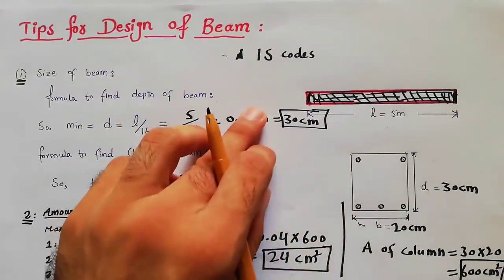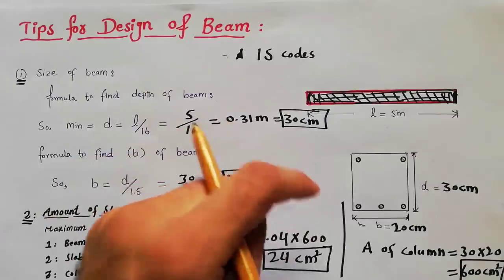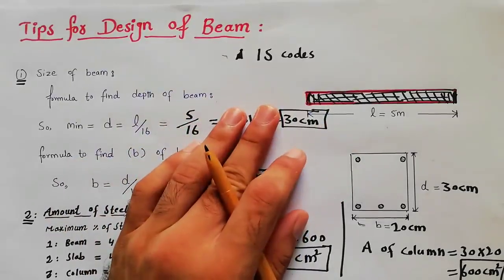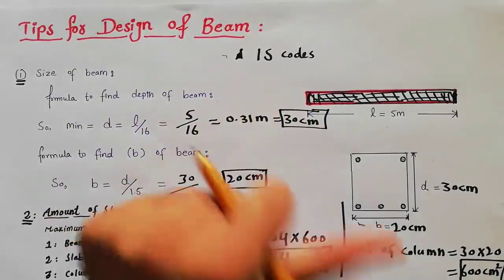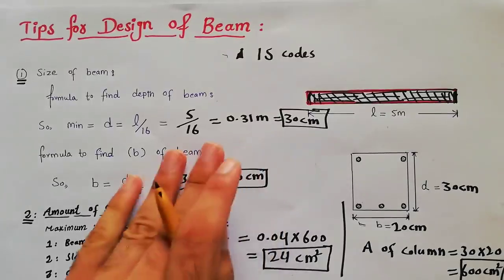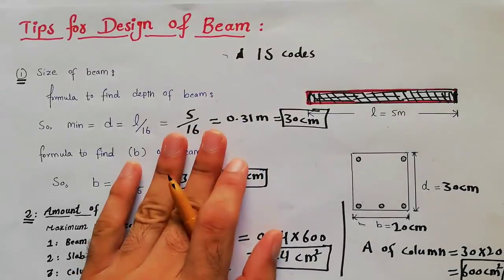These are the useful tips for design of an RCC beam: size using depth and breadth formulas, amount of steel per IS code, and number of stirrups using the cover and spacing formula. If you have any questions, comment below. Don't forget to like the video if it was helpful. Thanks for watching — see you in the next video, bye bye.